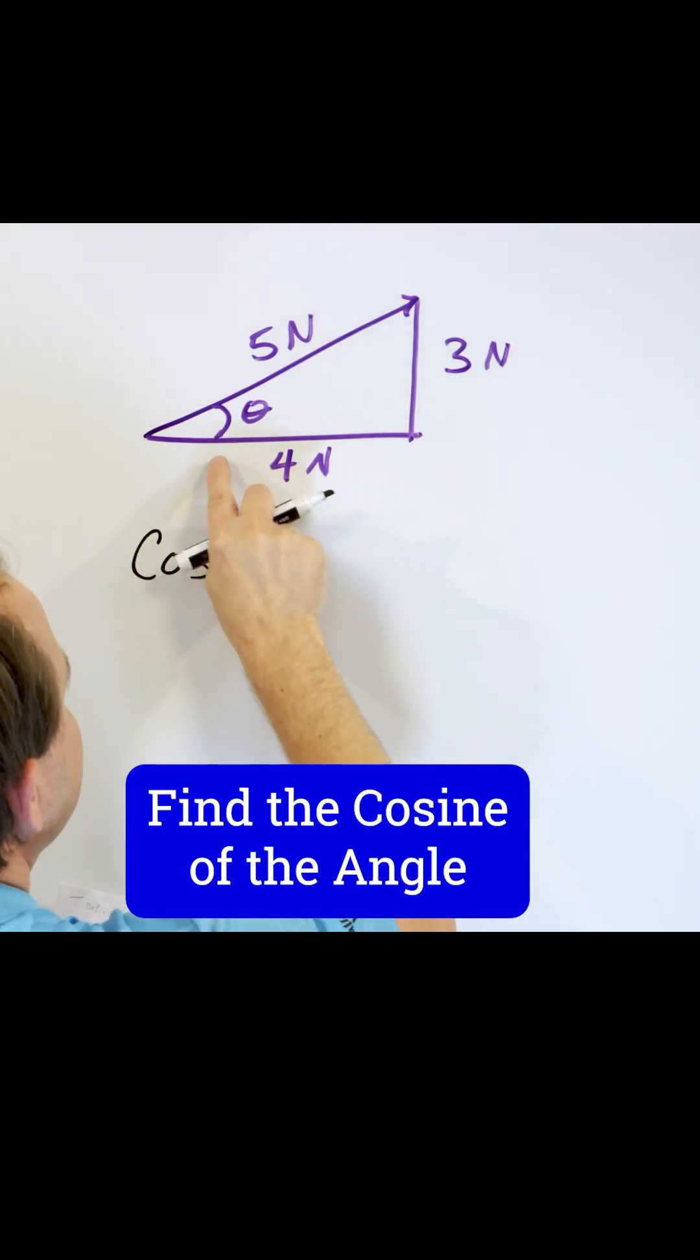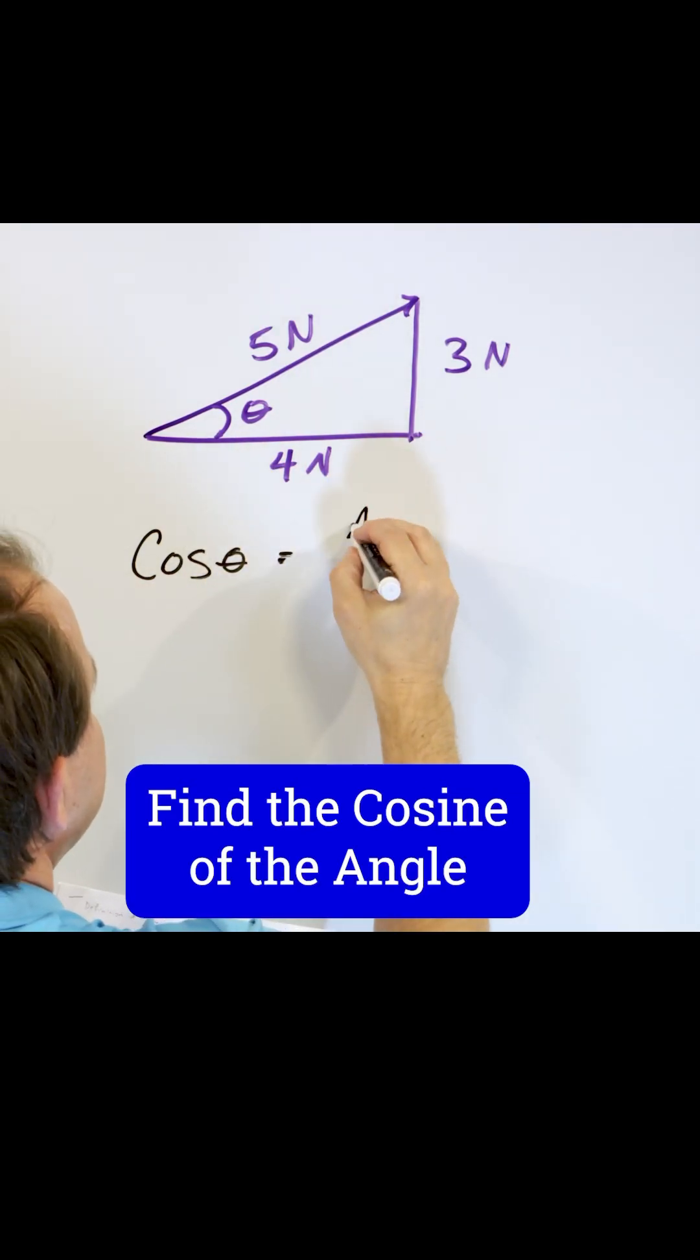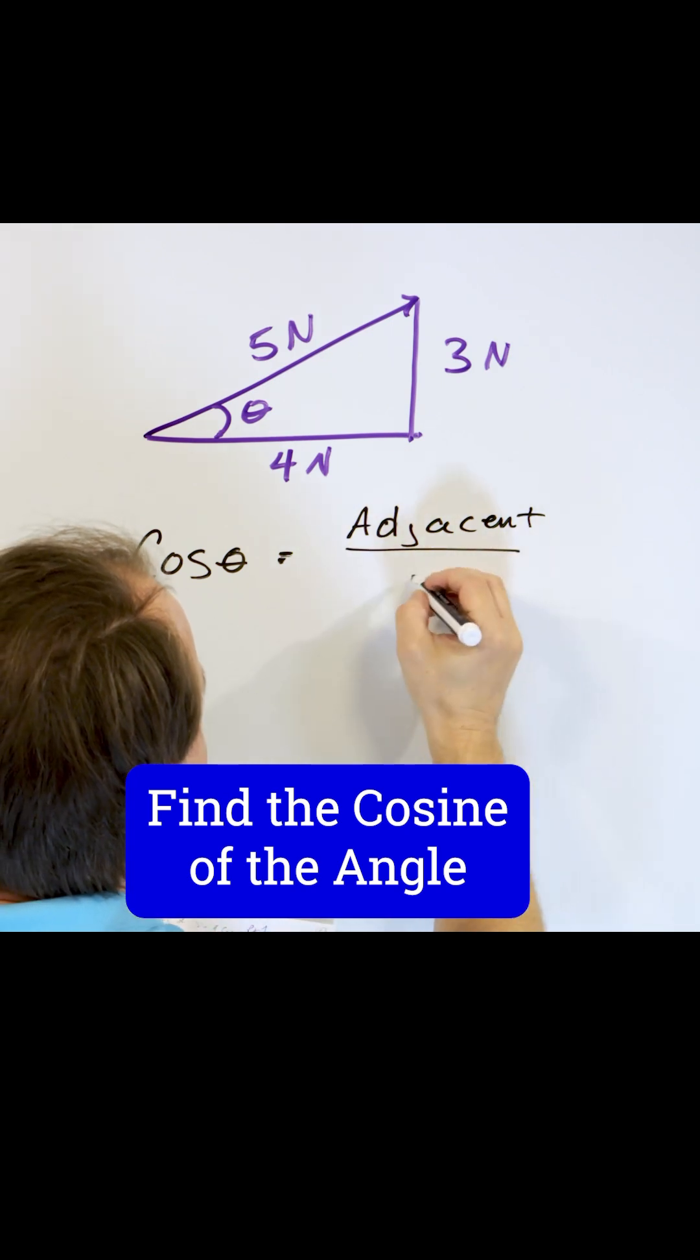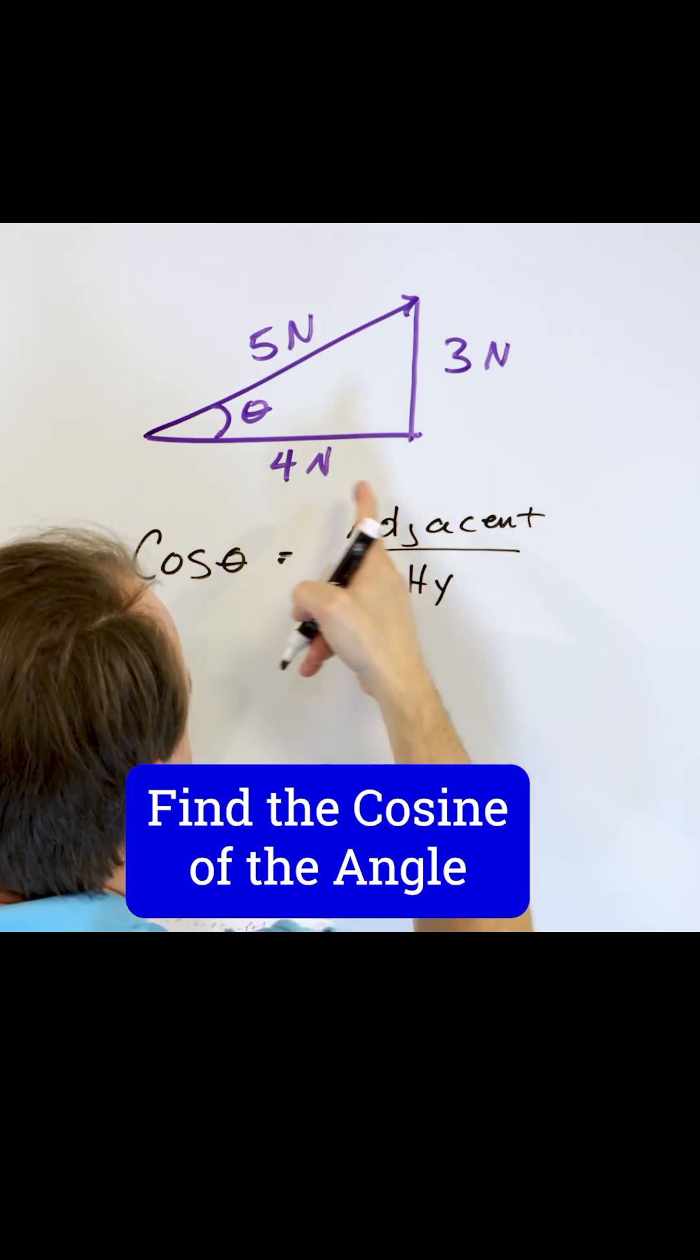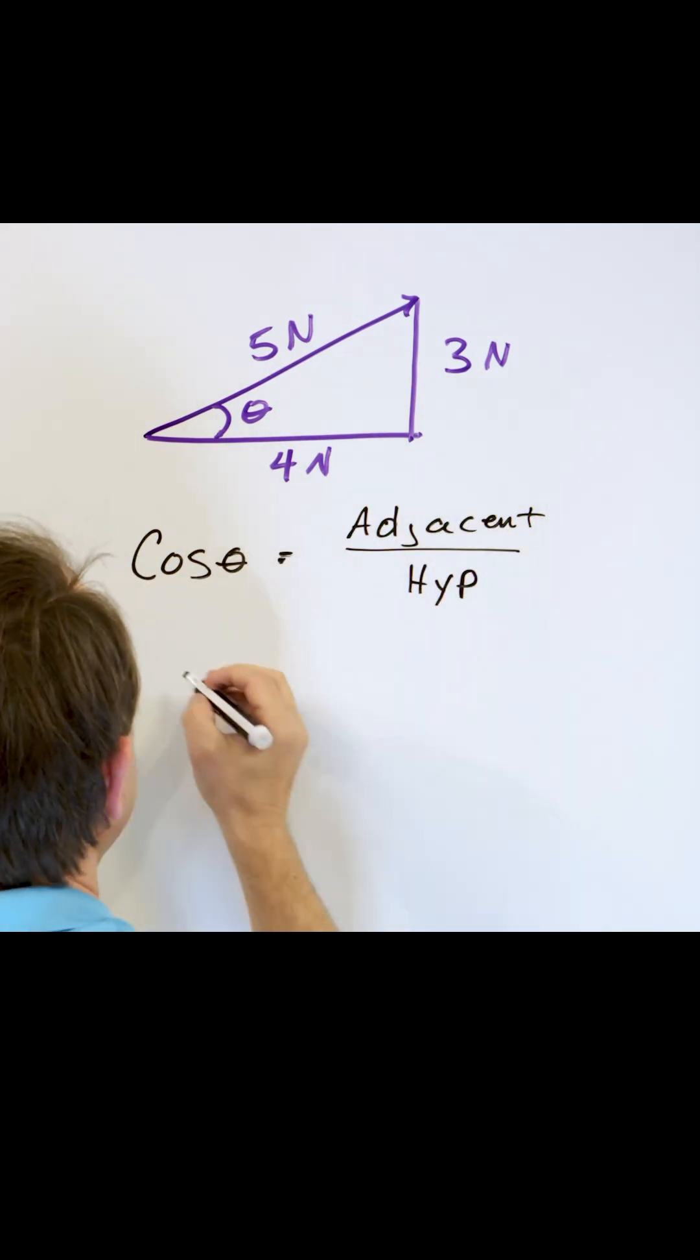The cosine function is the ratio of the adjacent side of the triangle divided by the hypotenuse.